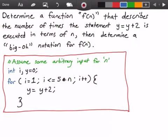Which means that i is going to increment by 1 each time. And within this for loop we have our statement y equals y plus 2. So let's go ahead and get started.